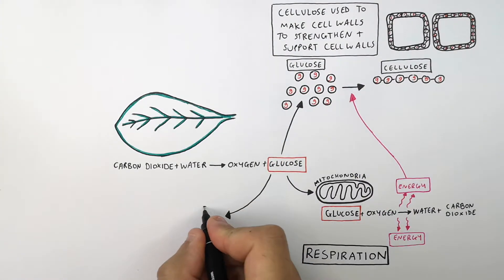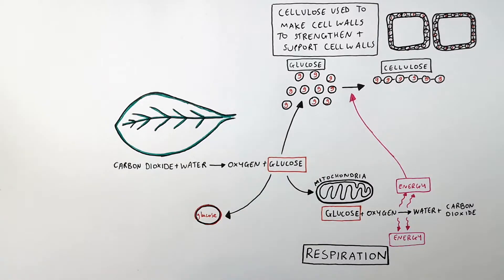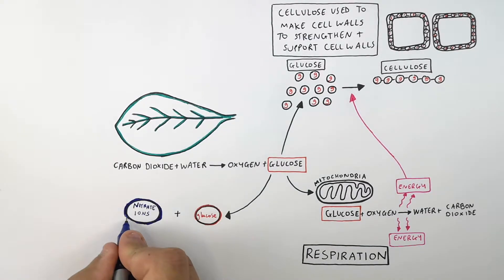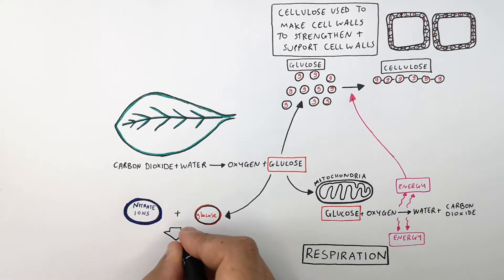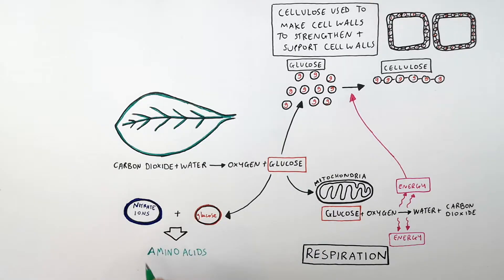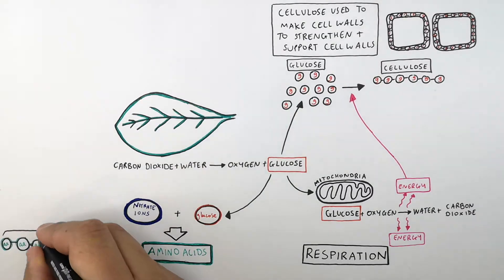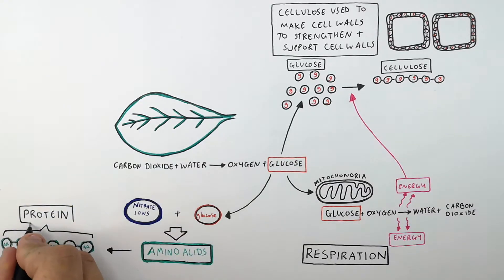Glucose molecules produced from photosynthesis are combined with nitrate ions to produce amino acids. When amino acids are bonded together they form a polypeptide chain, and then a protein. So amino acid chains end up forming proteins.